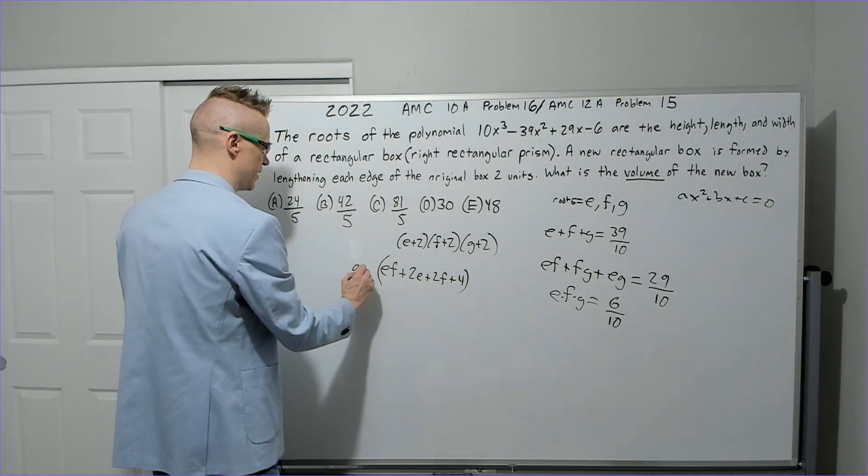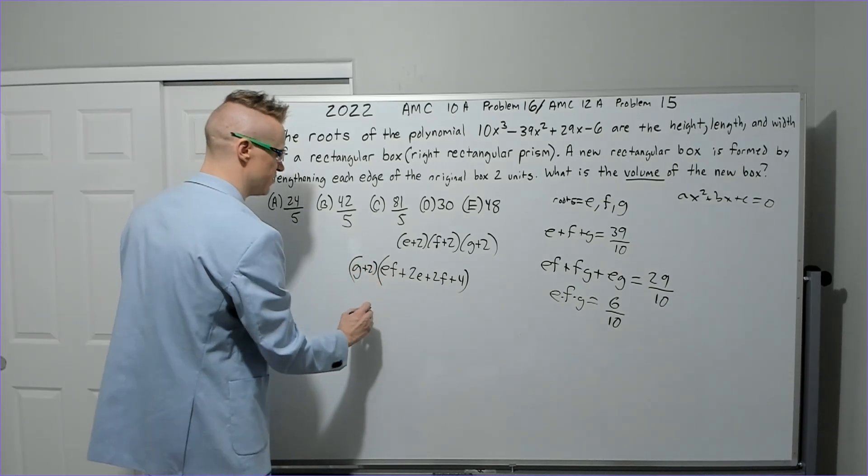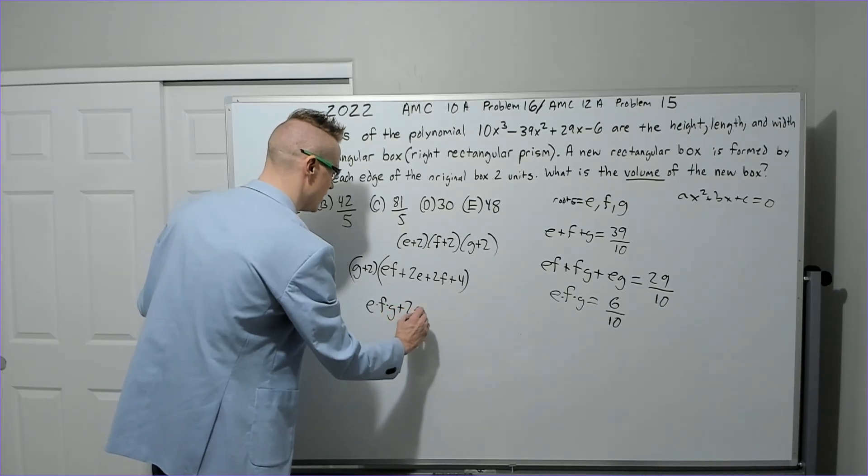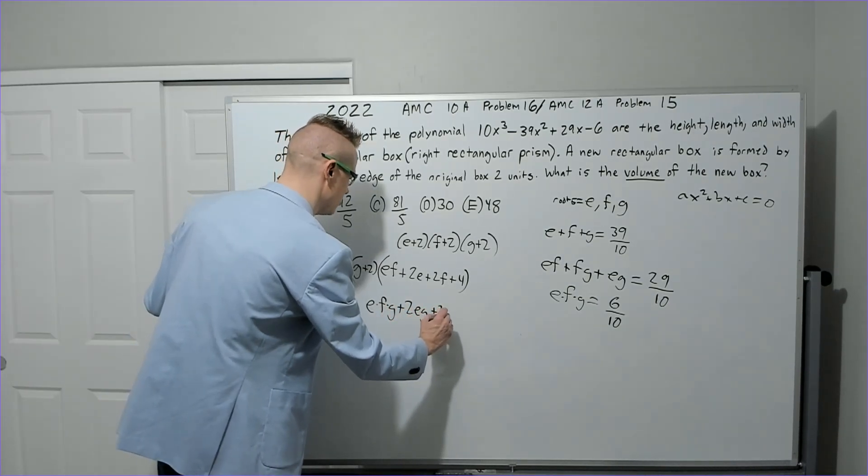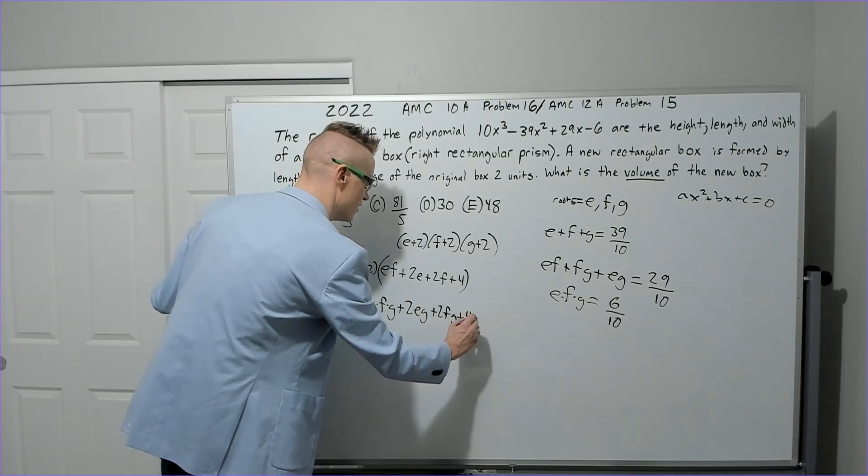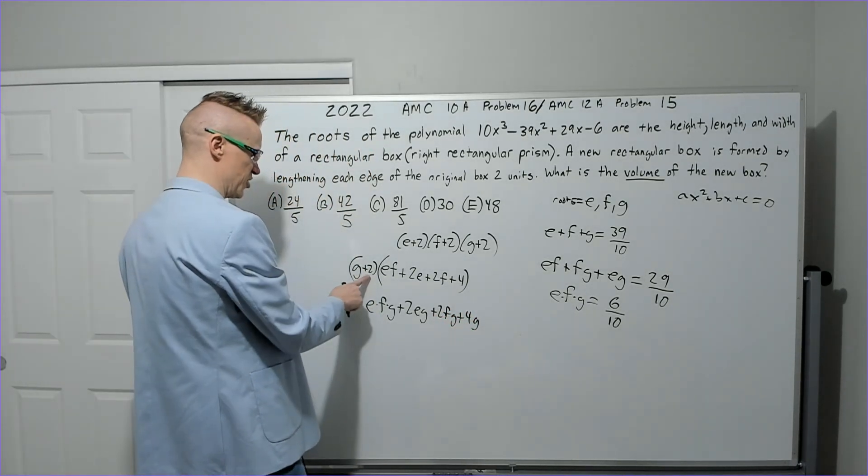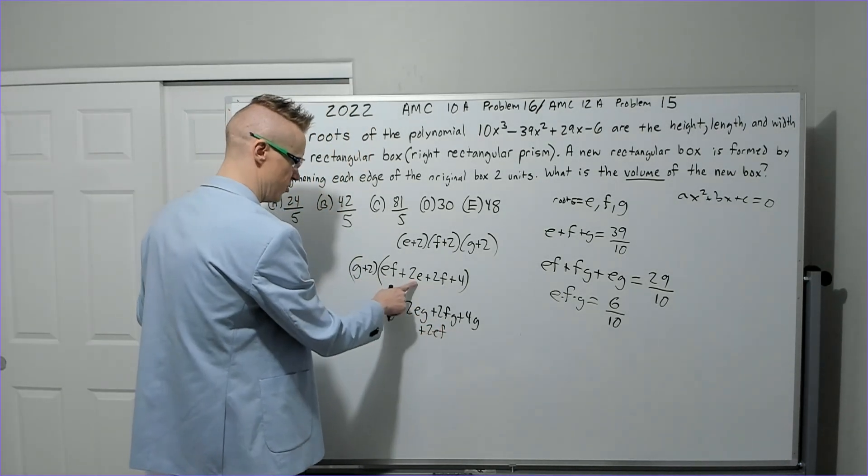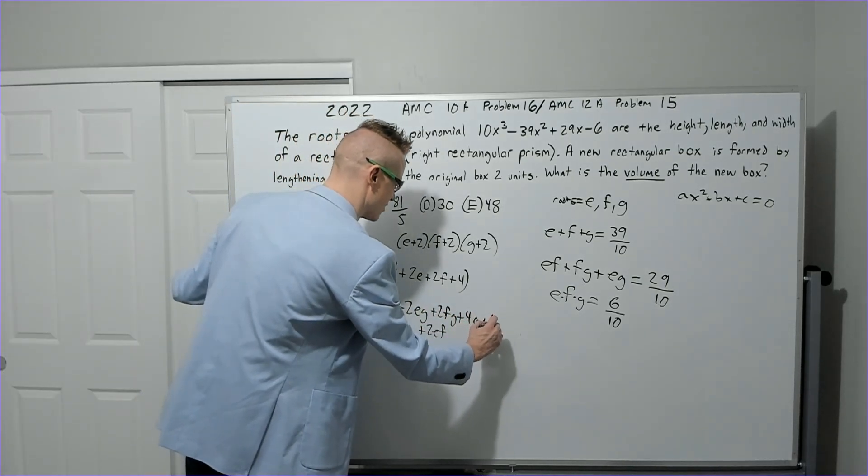I'm going to put (g + 2) in front. I'm going to distribute the g: you get e × f × g + 2eg + 2fg + 4g. And then now you're going to distribute the 2. You're going to get 2ef, I'm going to write it right here. Two times 2e is + 4e.